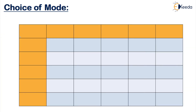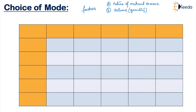Moving on to the next topic: choice of mode. When to choose which type of mode depends upon many factors. The major factors are: the nature of the material to be moved, the volume or how much quantity has to be moved, and the distance through which the material or person has to be moved. These are the major factors on which the choice of mode of transport depends.